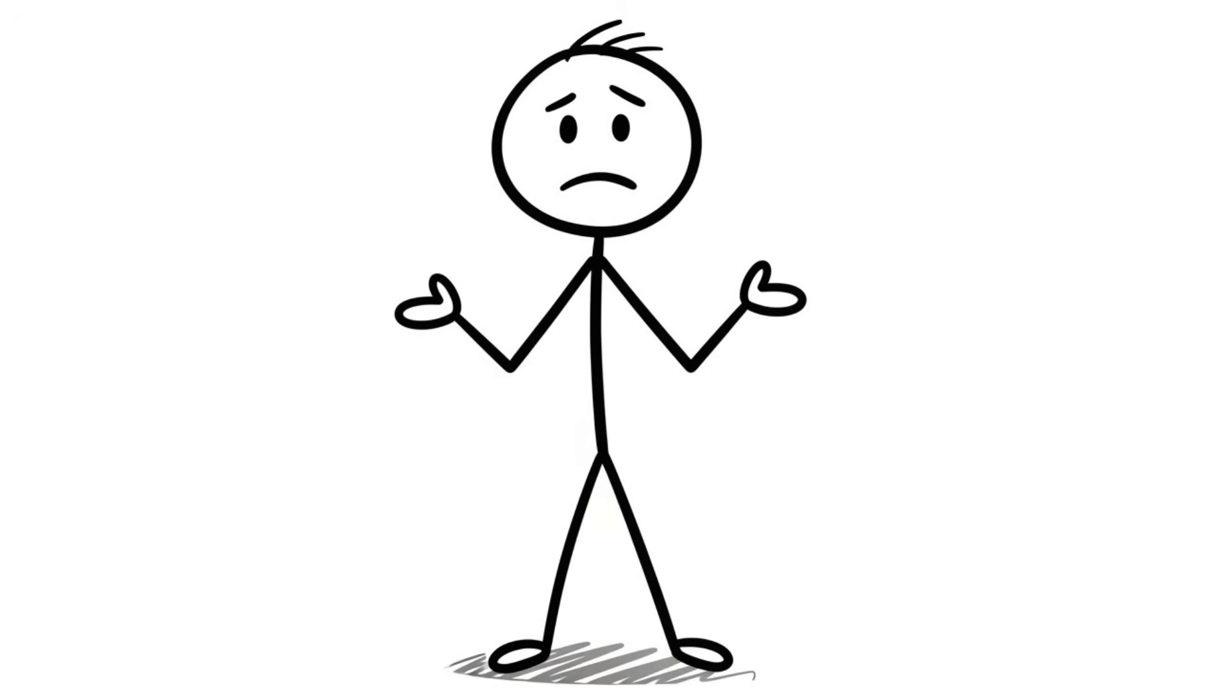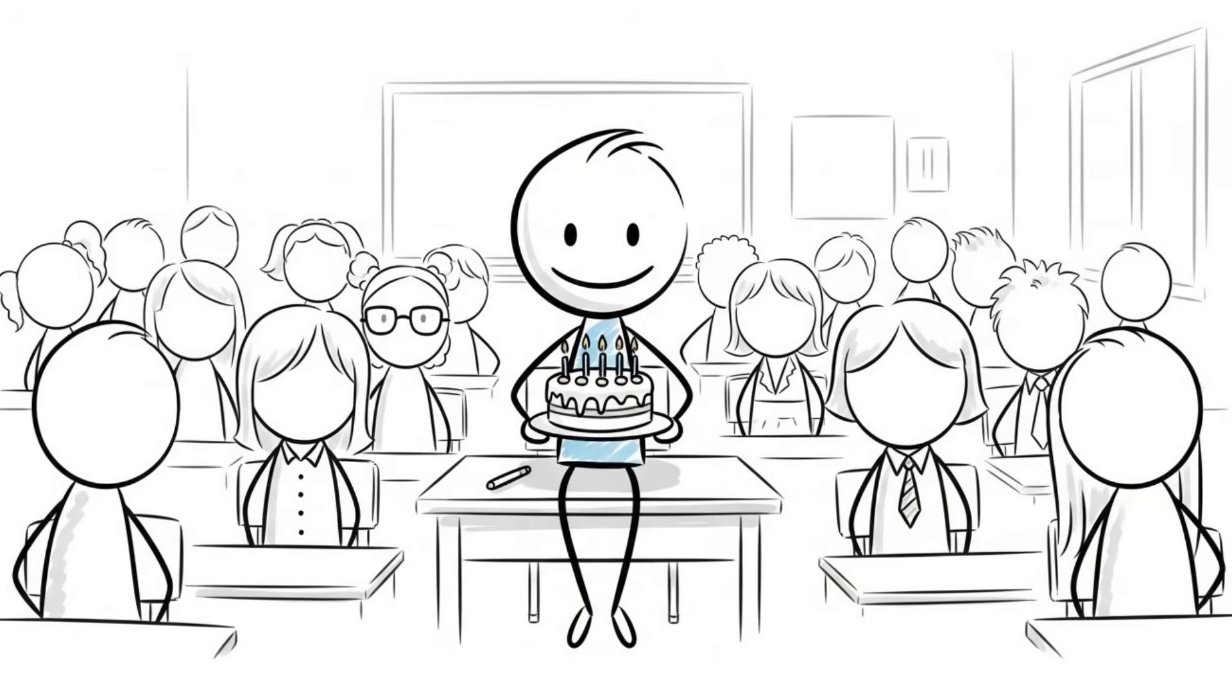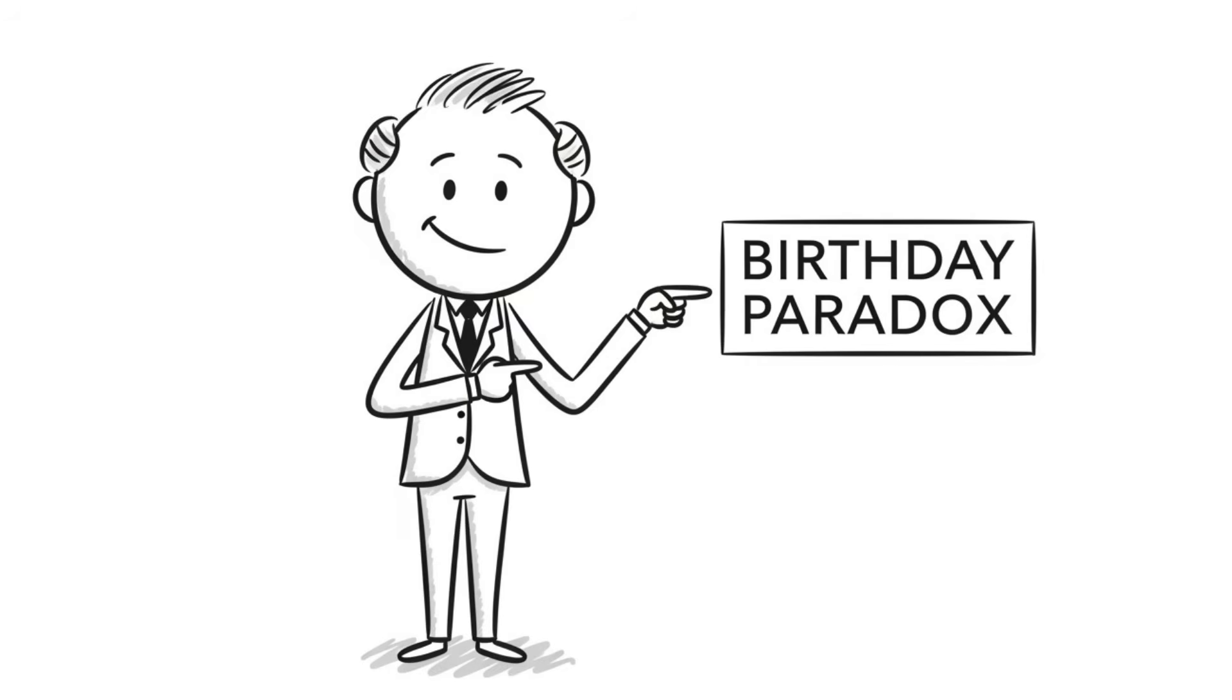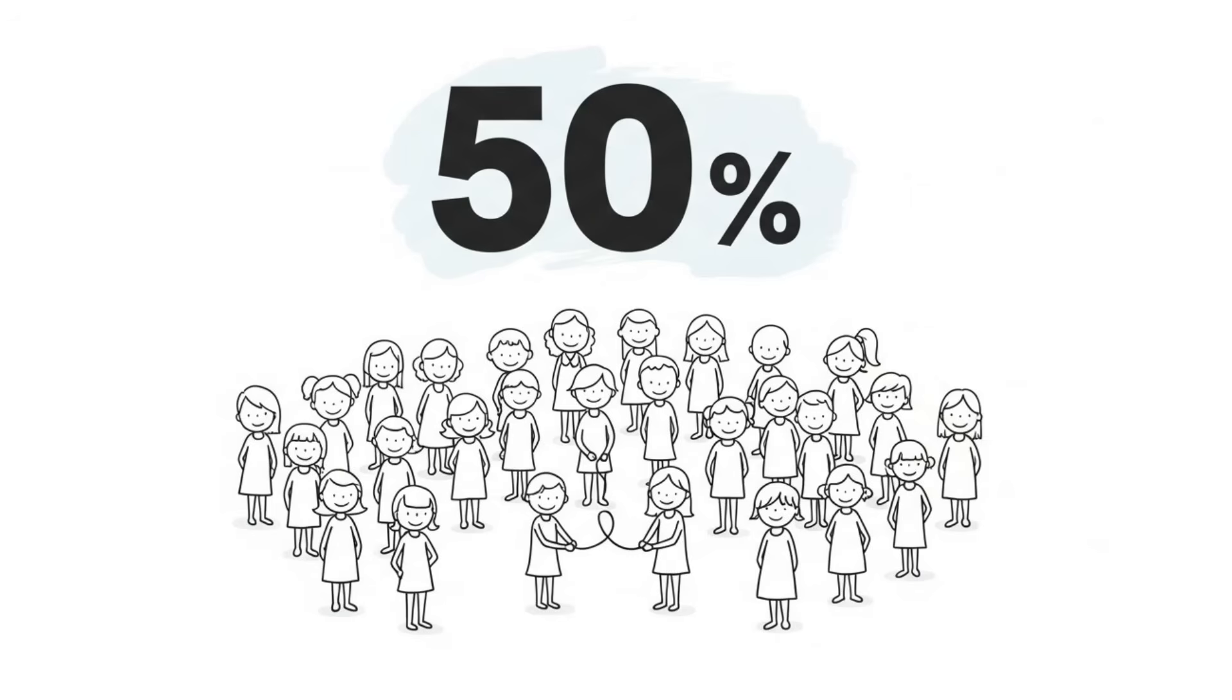You probably think that doesn't seem likely, and it might not even be true in your case, which just makes you the exception, but it's mathematically true. Mathematician Richard von Mises termed it the birthday paradox, where in a group of 23 people, there's a 50% chance two of them share the same birthday.